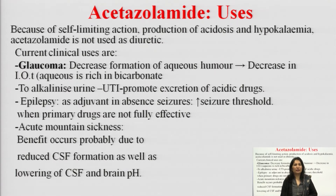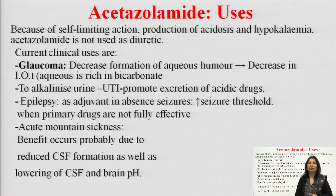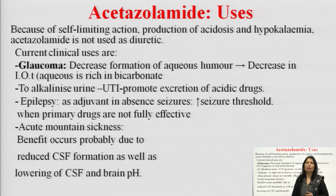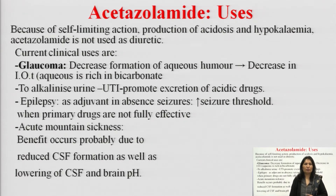Current clinical uses include: number one, glaucoma — it decreases the formation of aqueous humor and decreases intraocular tension, because aqueous humor is rich in bicarbonate. It is also used to alkalinize urine in UTI to promote excretion of acidic drugs. It is used in epilepsy to increase seizure threshold when primary drugs are not effective, and in acute mountain sickness due to reduced CSF formation and lowering of CSF and brain pH.